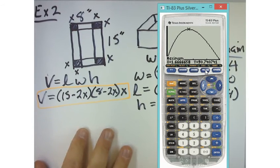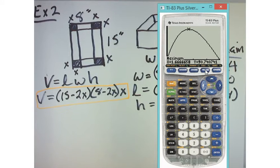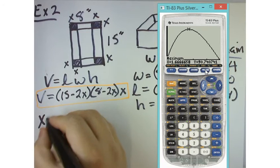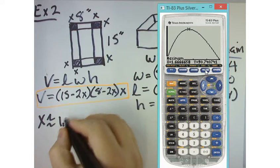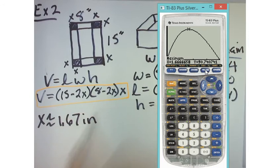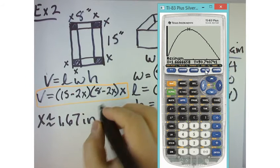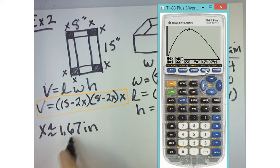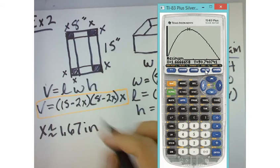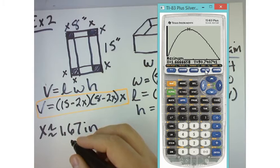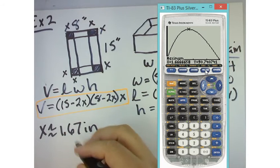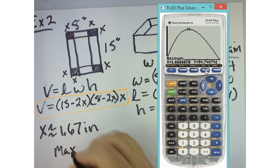So, now what does that mean in practical terms? What did I just do? Somebody tell me. What is that 1.67? It's the value of X that can make the box. If that is correct. If I cut out this little square of 1.67 by 1.67 of that cardboard sheet, that will give me the maximum volume I can get.